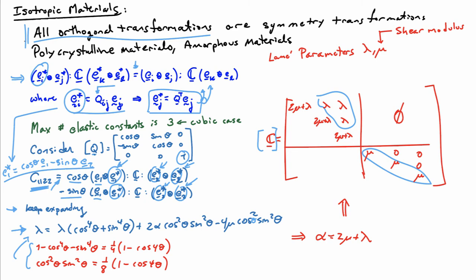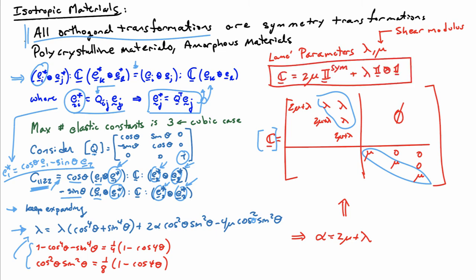You can also convert this into a form independent of coordinate frame. As written, a coordinate frame has been assumed, but you can write this as the fourth-order tensor C equals two mu times the fourth-order symmetric identity, plus lambda times the rank-two identity outer product with the rank-two identity. That's another way of writing it without using components directly. You can keep applying more and more symmetry elements — since it includes all orthogonal transformations — and you will find no additional interrelations. The main point is that isotropic materials have only two elastic constants, which greatly simplifies the experimental requirements for determining elastic properties, because really you only need to make two measurements.